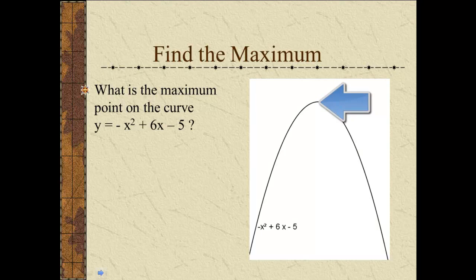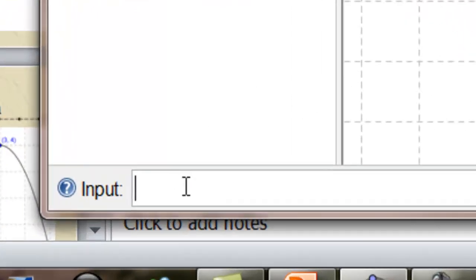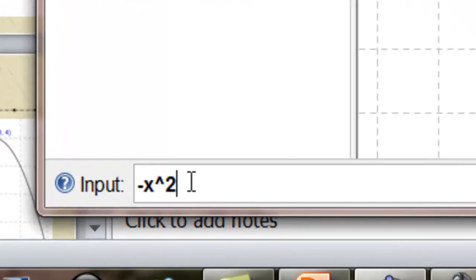Rate of change is the derivative, so we'll find the derivative, find out where it's zero. Draw the curve. Negative x squared plus 6x minus 5.